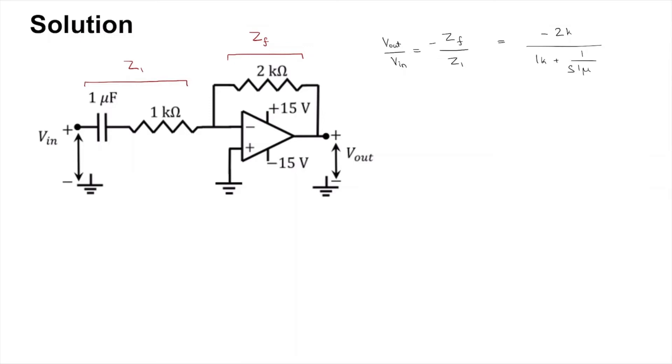So this now becomes... You can replace s by, that is for the gain, you can replace s by j omega and then take the magnitude.